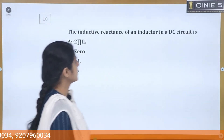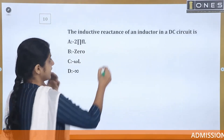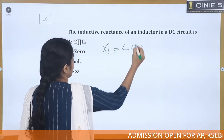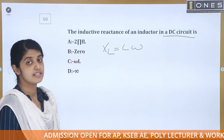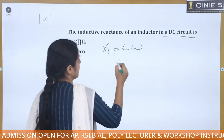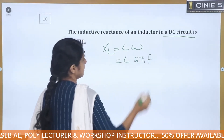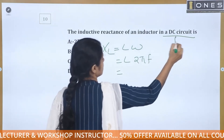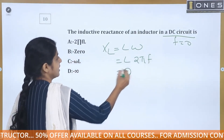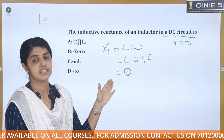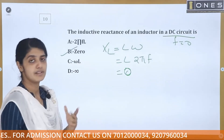The next question: the inductive reactance of an inductor in a DC circuit is? Inductive reactance XL = Lω = L × 2πf. In a DC circuit there is no frequency, so f = 0, which means XL = 0. The inductive reactance in a DC circuit is zero. Option B is the answer.